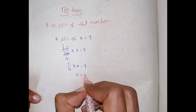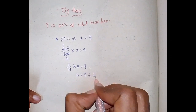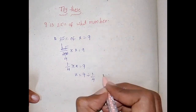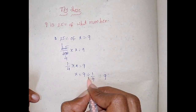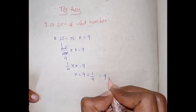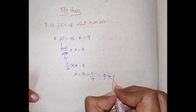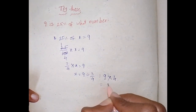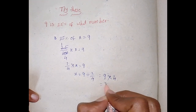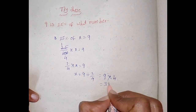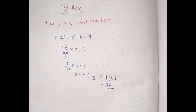x is equal to 9 divided by 1 by 4, which equals 9. Division symbol changes to multiplication and we write the reciprocal, that is 4 by 1. So 9 into 4 equals 36. This is the answer.